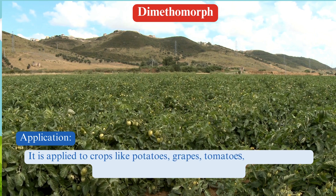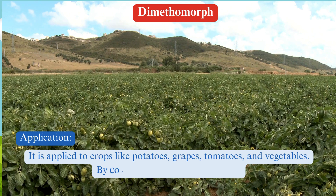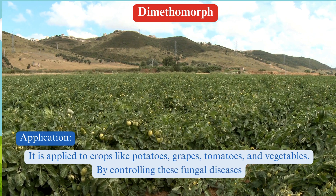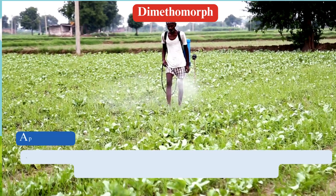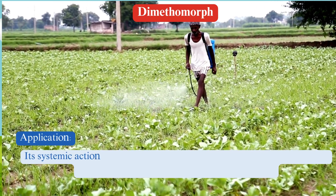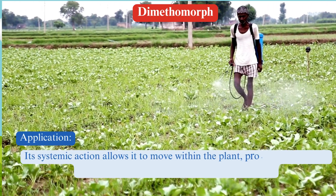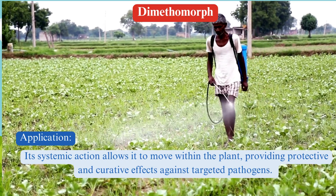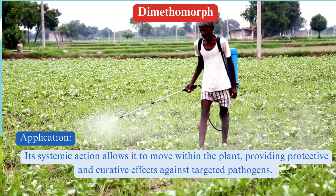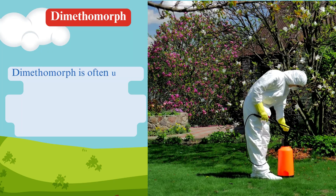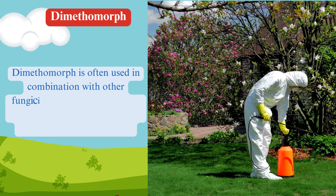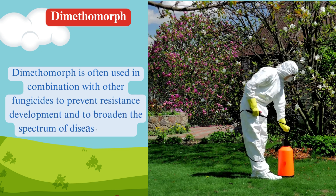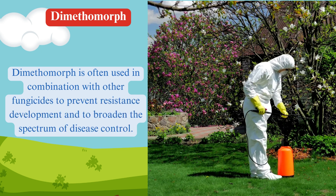By controlling these fungal diseases, dimethomorph helps protect crops from significant yield losses and quality degradation. Its systemic action allows it to move within the plant, providing protective and curative effects against targeted pathogens. Dimethomorph is often used in combination with other fungicides to prevent resistance development and to broaden the spectrum of disease control.